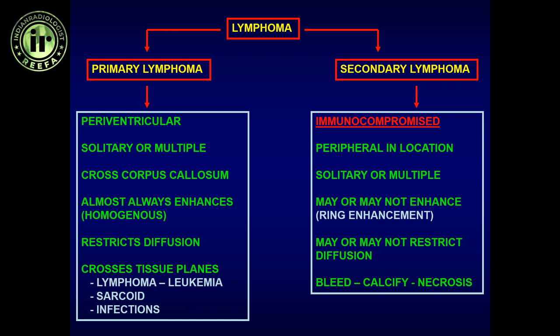These are two separate imaging entities with different appearances. Primary lymphoma tends to be a more solid tumor with sheets of enhancement. Like germinoma, lymphoma is a round blue cell tumor, so the nuclear-to-cytoplasmic ratio is very high. These densely packed cells restrict water movement, causing restricted diffusion. Such a densely packed neoplasm will be hyperdense on CT and iso- to hyperintense on T1 and T2 sequences with surrounding vasogenic edema.